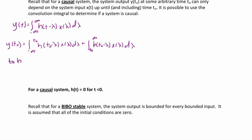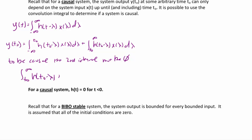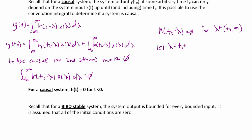In order for the system to be causal, the second integral must be zero because it depends on future values. So the integral from t₀ to infinity of h(t₀ minus lambda) times x(lambda) d-lambda must equal zero. Assuming x is not zero, this means h(t₀ minus lambda) must equal zero for lambda between t₀ and infinity. Assume we let lambda equal t₀ plus epsilon, where epsilon is a small positive number. Then h(t₀ minus (t₀ plus epsilon)) equals zero, or h(negative epsilon) equals zero.